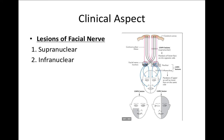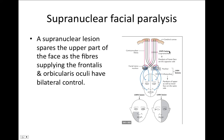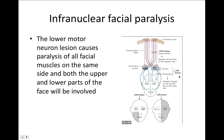Coming to the clinical aspects — lesions of the facial nerve can be supranuclear (upper motor neuron) or infranuclear (lower motor neuron). A supranuclear lesion spares the upper part of the face, because the muscles of the frontalis and orbicularis oculi have bilateral cortical control. A lower motor neuron or infranuclear lesion causes paralysis of both the upper and lower face on the same side.